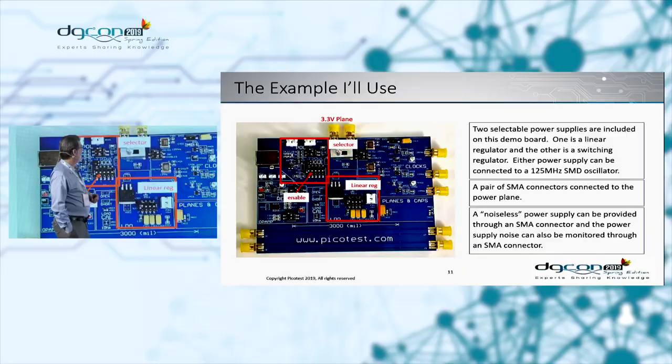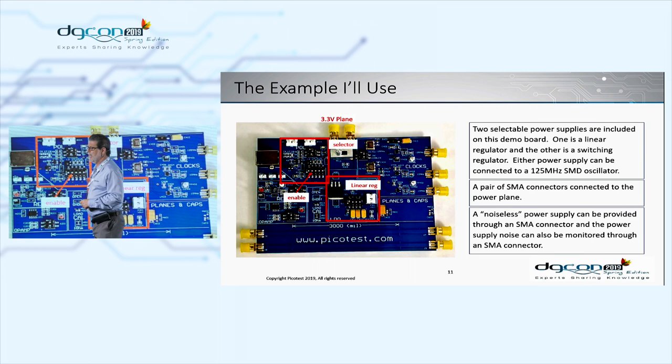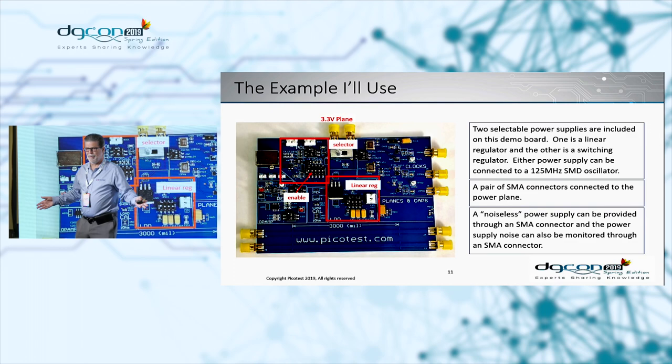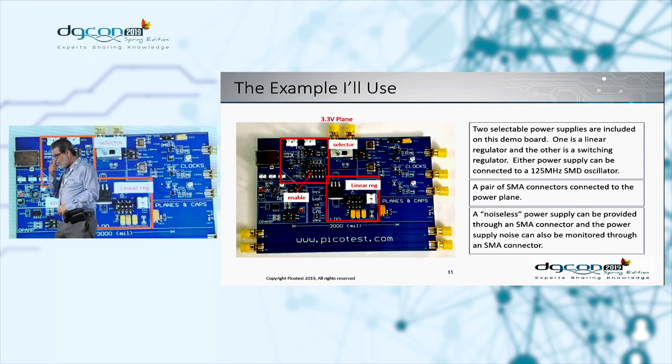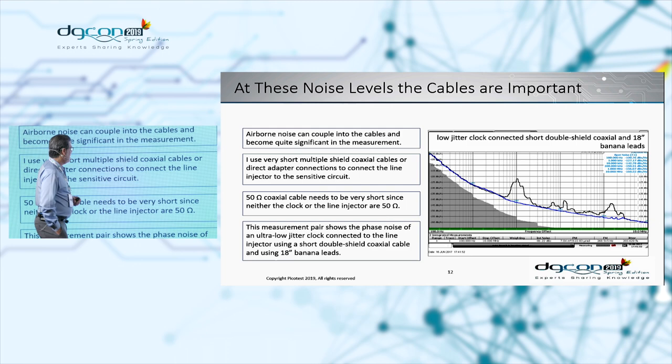That's about the closest we can get to noise-free. In our demo board, we have a couple of clocks and some clock buffer circuits, plus two power supplies — a switching regulator and a linear regulator. We can choose different capacitors to vary noise, have SMA connectors where we can measure noise, and clock outputs where we can measure phase noise and jitter. What we want to do is measure the phase noise and jitter of these sensitive circuits with different levels of noise and try to equate the noise.